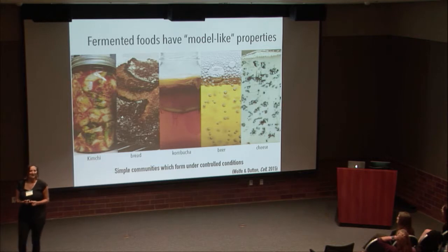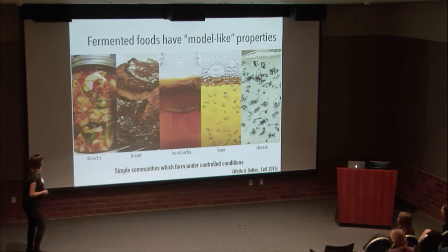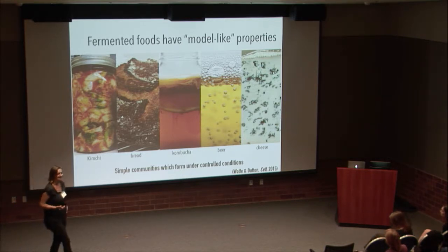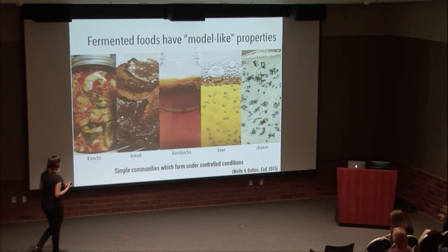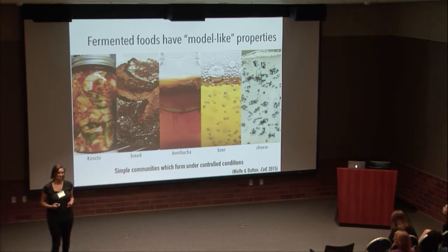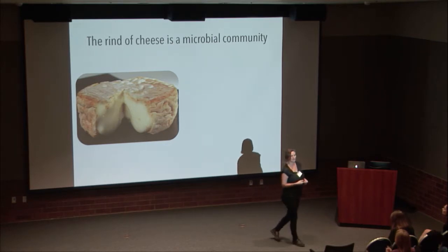In my lab, we're actually using fermented food microbiomes because they have all of the wonderful properties you might look for in a model system. Whether you're a fan of kimchi, sourdough bread, kombucha, beer, wine, or cheese—these are all foods where over thousands of years, humans have figured out how to precisely manipulate microbial communities to our advantage. In the process, they've set up systems in which relatively simple communities form under highly controlled conditions that we could easily replicate in the lab.